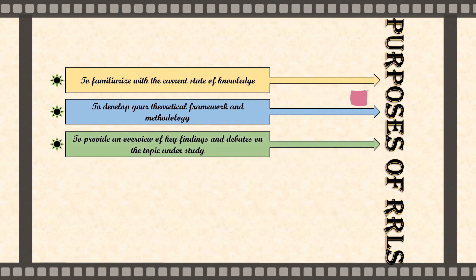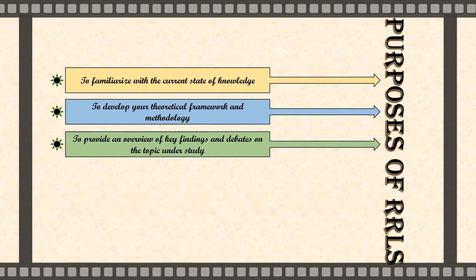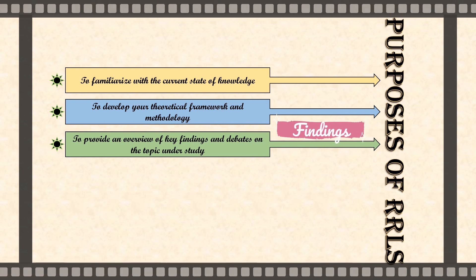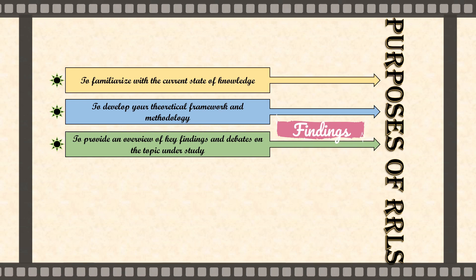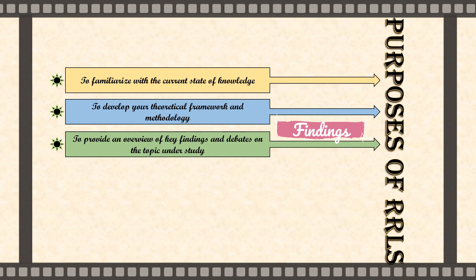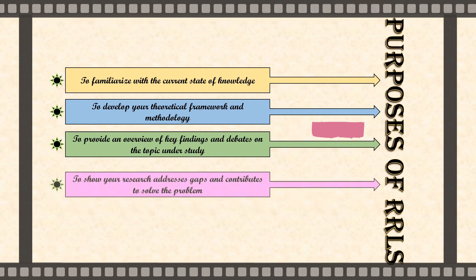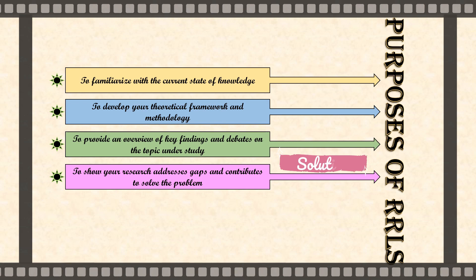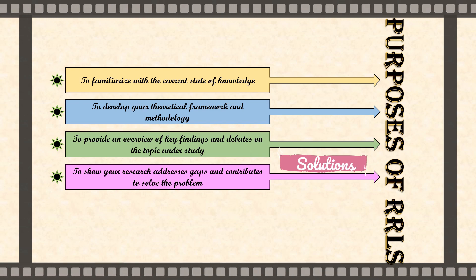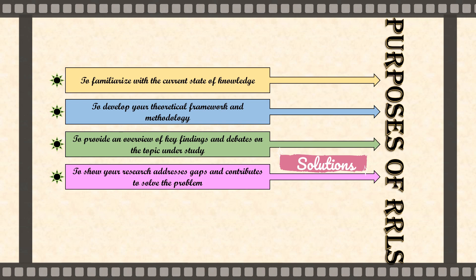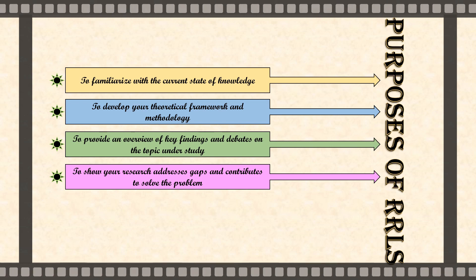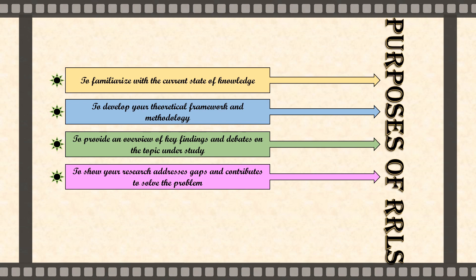The next purpose is to provide an overview of key findings and debates on the topic under study. Reading and looking for sources connected to your research will help you build a perfect direction, allowing you to convincingly interpret, explain, and generalize from your findings. Next, we have to show your research addresses gaps and contributes to solve the problem. Conducting a thorough reading on various articles and previously held researches will help reveal and explore issues relevant to the current research. As such, you will be able to get familiar with the research gaps you need to address, and your goal should be to find a space or opening for contributing new research.